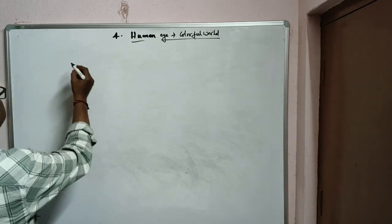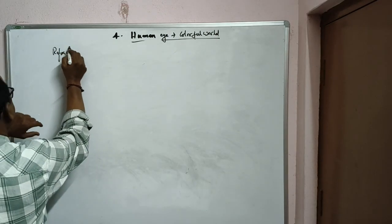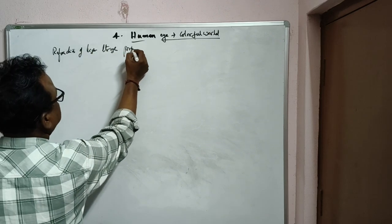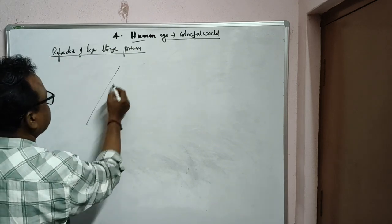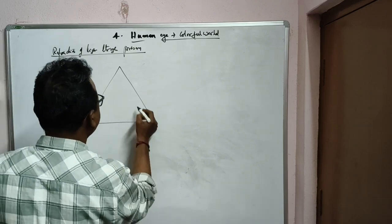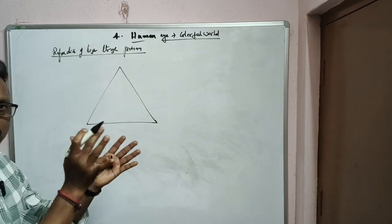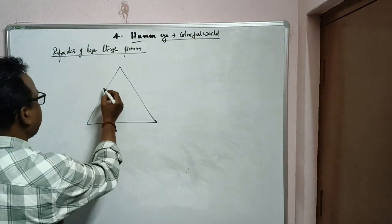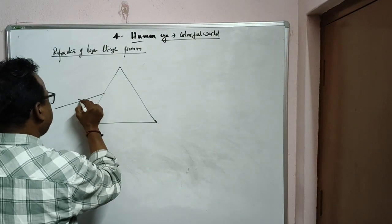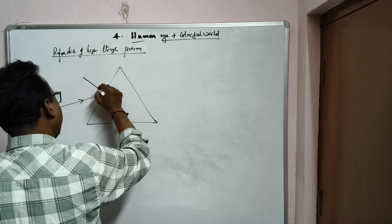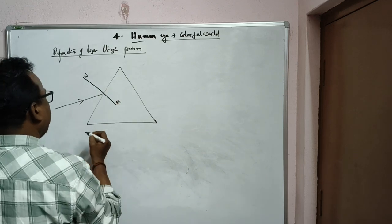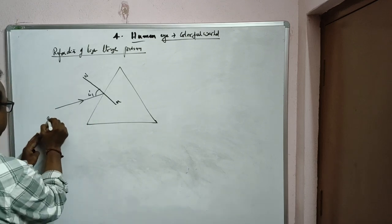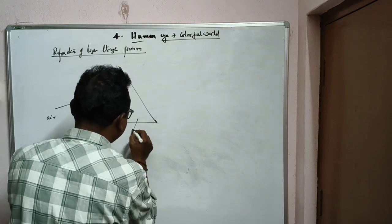Next is refraction of light through a prism. A prism is a solid triangle — completely solid, not hollow. When light is incident on the prism, it travels from a rarer to a denser medium. The angle of incidence i1 is formed at the first normal NM, and since light goes from rarer to denser, it deviates towards the normal.